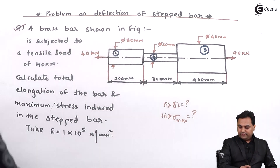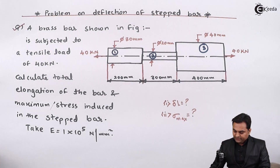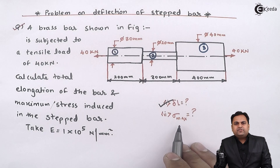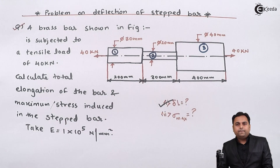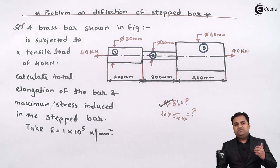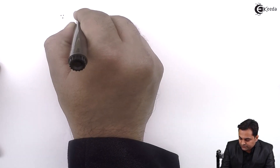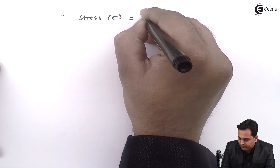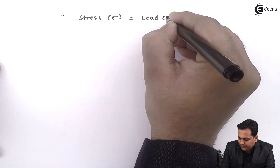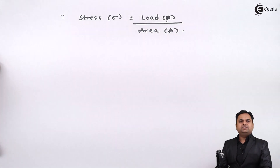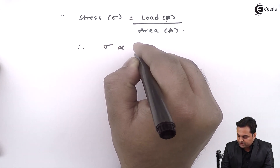The first part was to calculate the deflection, which is 0.617 mm. Next, we calculate maximum stress. Looking at the stepped bar, we need to find in which of the three sections the maximum stress occurs. The concept is that stress = P/A, so stress is inversely proportional to area.